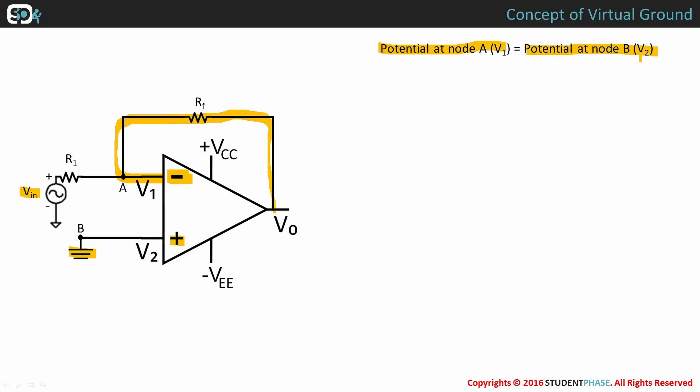We know that the gain of an op amp is given by AD equals V0 divided by VD. After swapping VD and AD across LHS and RHS in this equation, we get VD equals V0 divided by AD.